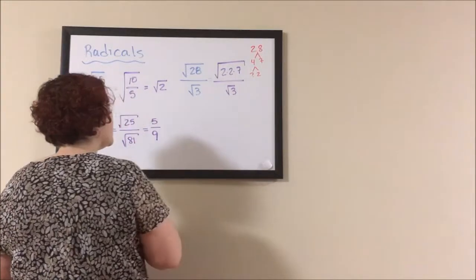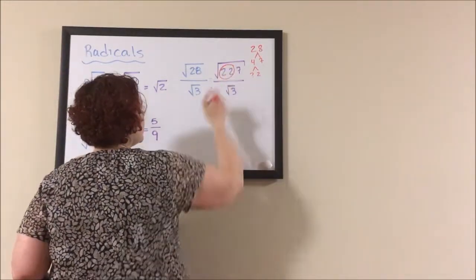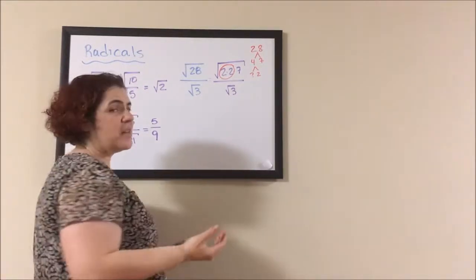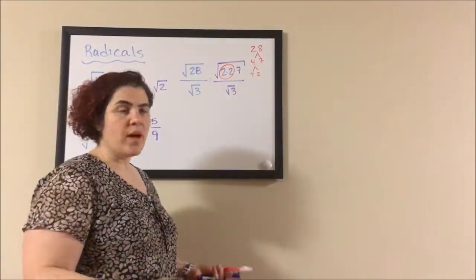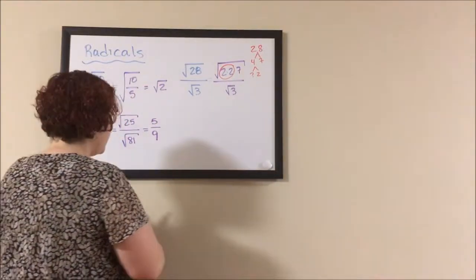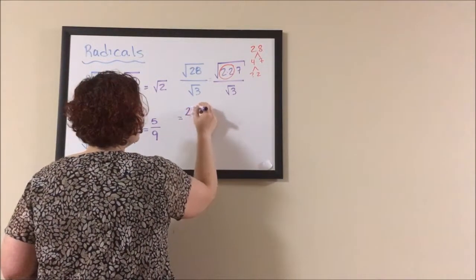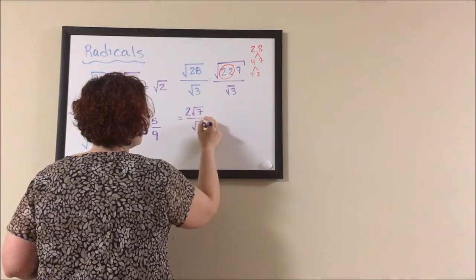In the numerator, I see that I have a pair of 2's that can be taken out of that radical. I also notice none of the numbers in the numerator divide by 3. So my next step, I have 2 times the square root of 7 over the square root of 3.